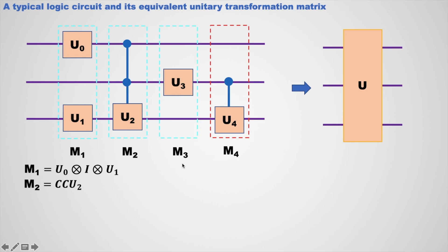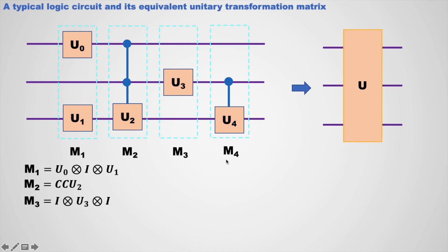This block is represented by M3 equals to I tensor U3 tensor I. And last of all, this gate with a parallel wire is represented by M4 equals to I tensor CU4, where CU4 is a controlled-U4 gate represented by a 4 by 4 matrix depending upon its operation. The equivalent matrix is U equals to M4 · M3 · M2 · M1, which is their matrix product.